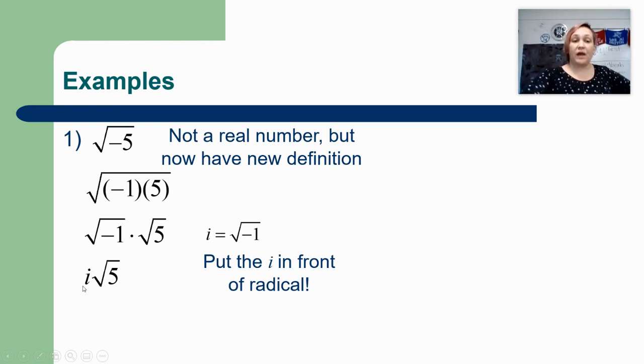You do always want to put the i in front of the radical. It's just like in our previous video, whenever anything escaped out of the radical it went in front. So make sure that you're putting it in front of the radical. If you put it behind the radical it kind of looks like it's underneath the square root with the number 5 and that can get really confusing.